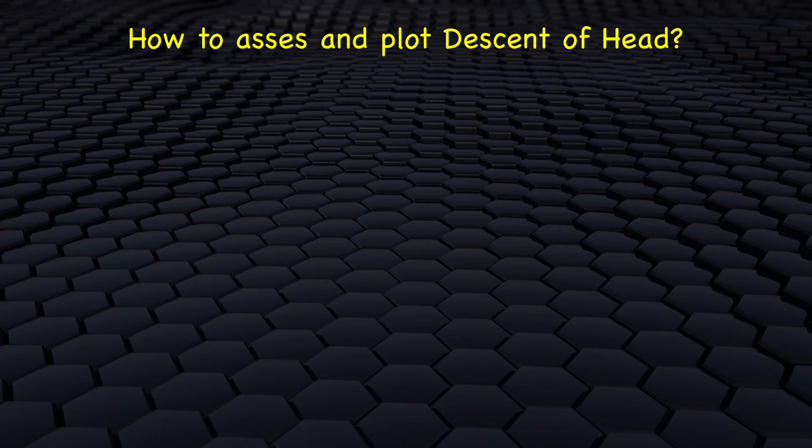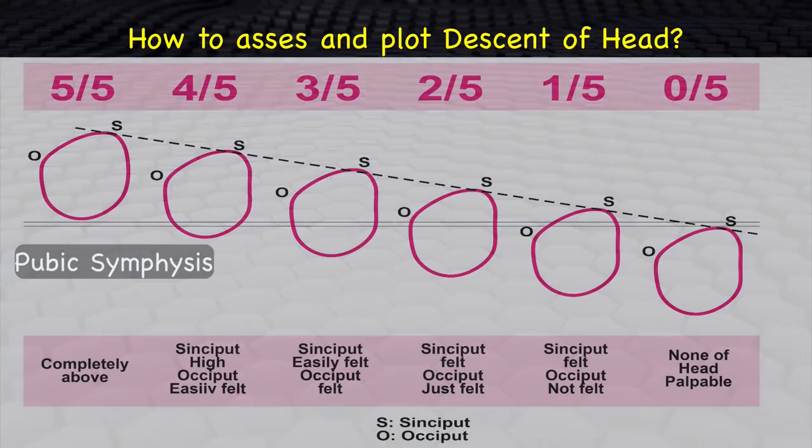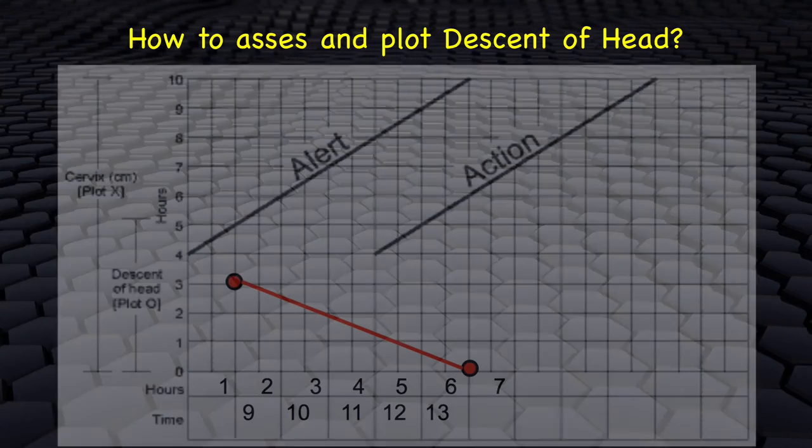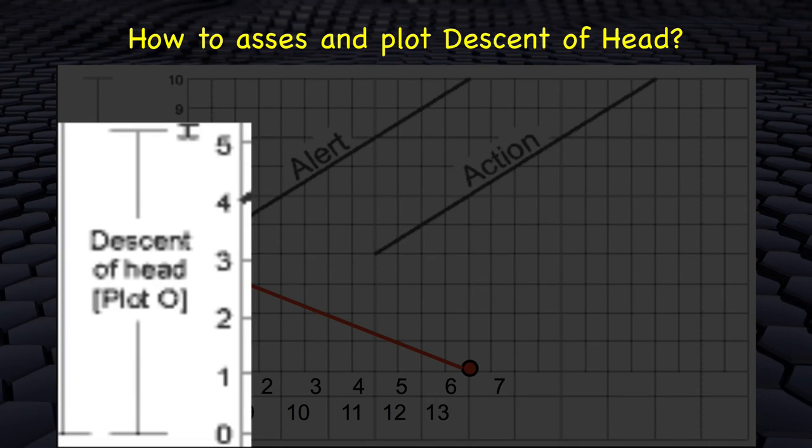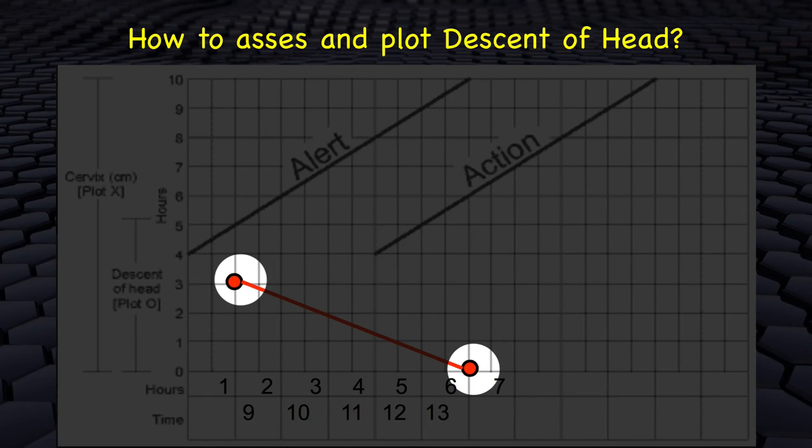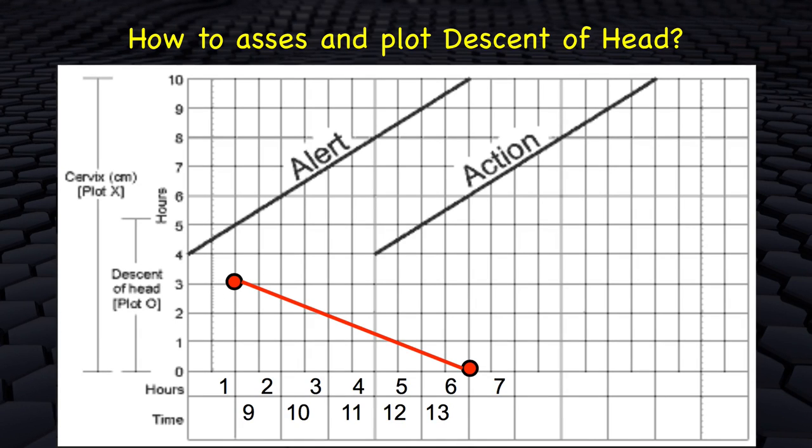How to assess and plot descent of head. Descent of head is assessed by abdominal palpation and not by per-vaginal examination. It refers to how much of the fetal head in one-fifth is palpable in the abdomen above the pubic symphysis. On the left of the graph is the word descent with numbers 5 to 0. Descent is recorded as small o at the same time as every vaginal examination.